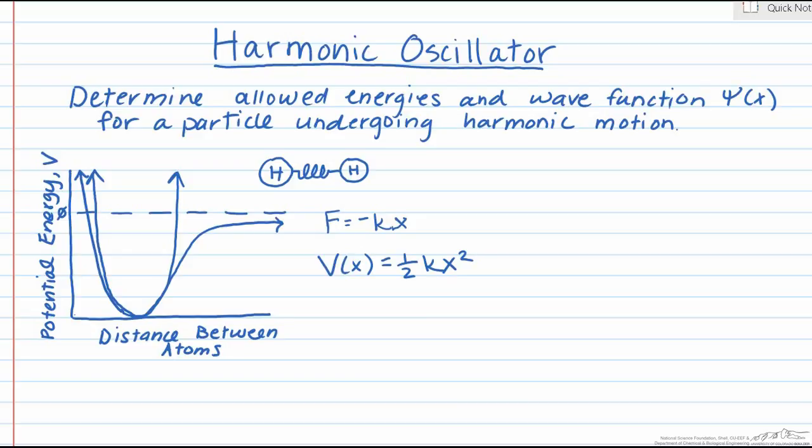Now that we have our quadratic potential defined for our particle, let's take a look at the general Schrodinger equation so that we can determine our wave function and allowed energies. Here you can see we've plugged in one-half kx squared for our potential term.